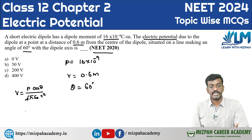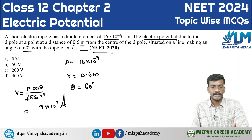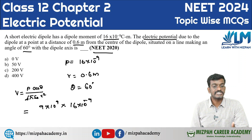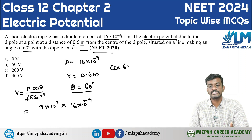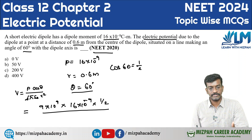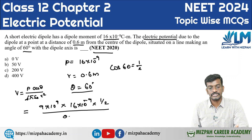1 by 4 pi epsilon naught value we know is 9 into 10 to the power 9. P, the dipole moment, has the value 16 into 10 to the power minus 9. Cos theta: theta value is 60, so cos 60 equals 1 by 2. Divided by r squared: r squared is 0.6 the whole squared.